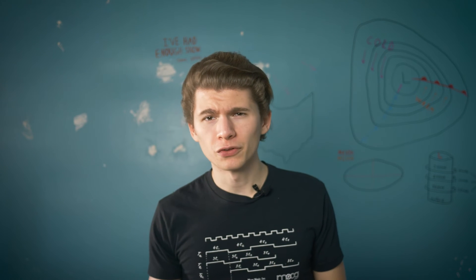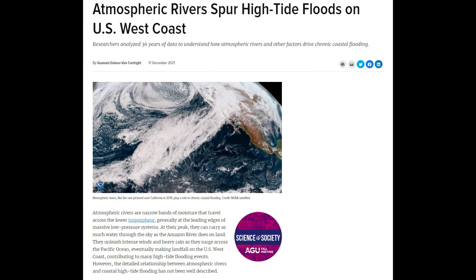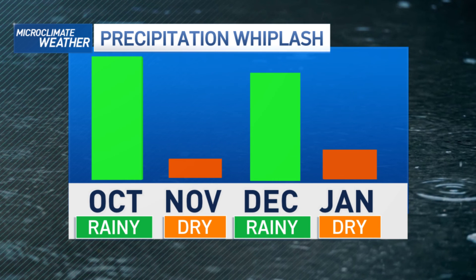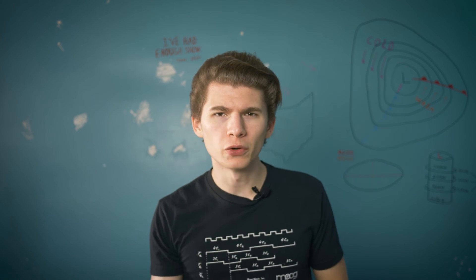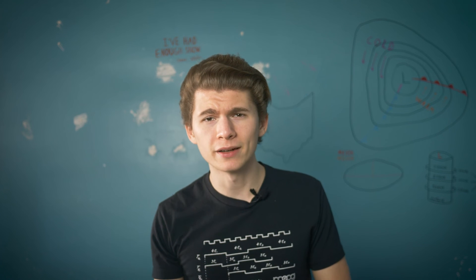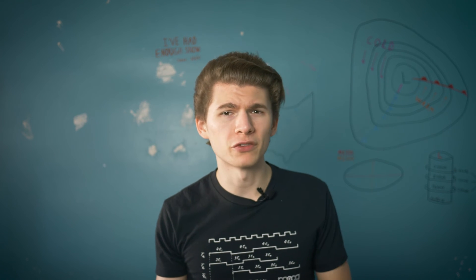A recent example of this happening is the formation of atmospheric rivers above California, which would bring really rainy periods, followed by really dry periods very close together. The extreme swings in weather can affect many aspects of our ecosystem, from increased crop mortality to even polluting the Midwest water supply.